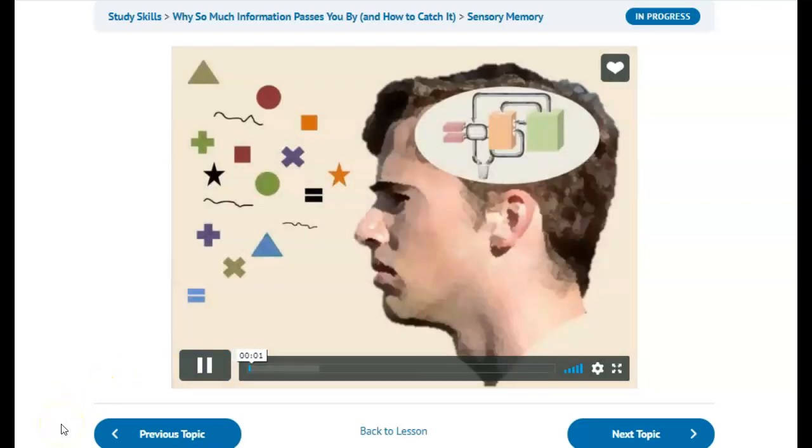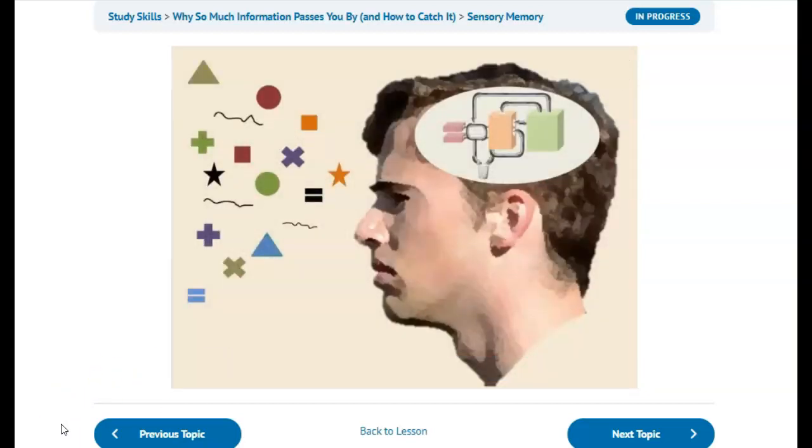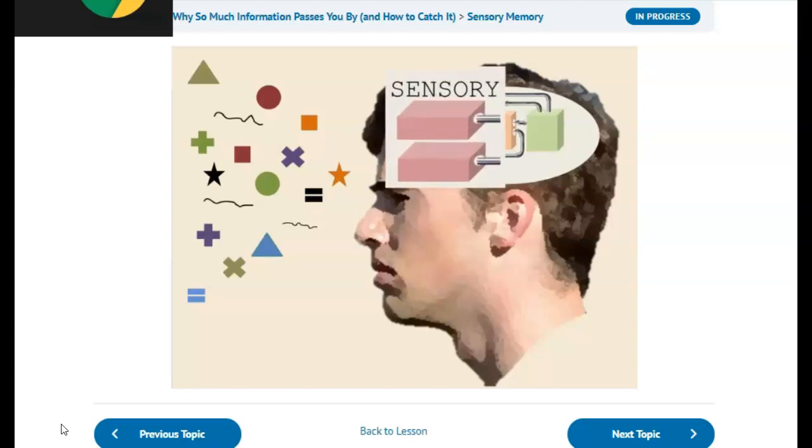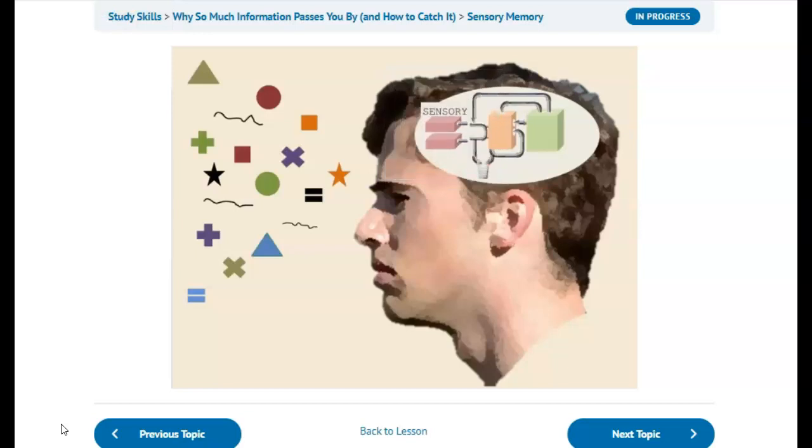We receive lots and lots of signals from the outside world all the time. Our sensory memory is the first holding area for these signals. It takes time to sort through all the signals. As we're thinking about what we just heard or saw, the original signal can easily change or go away.